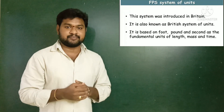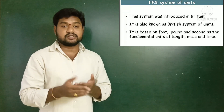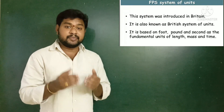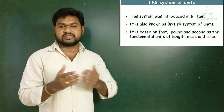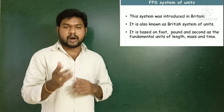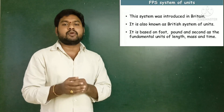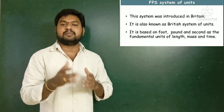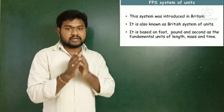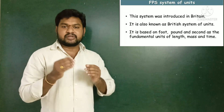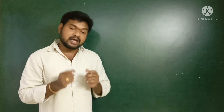The FPS system was introduced in Britain and is also called the British system of units. Here, foot, pound, and second are used to indicate the properties of length, mass, and time respectively. So these three — CGS, MKS, and FPS — are the three main fundamental systems of units.